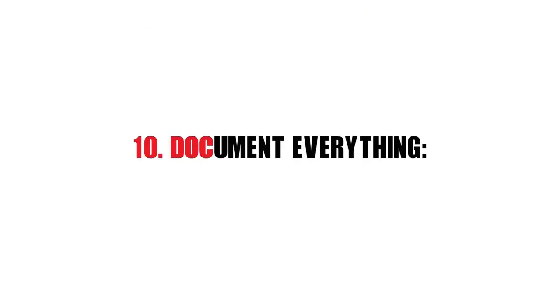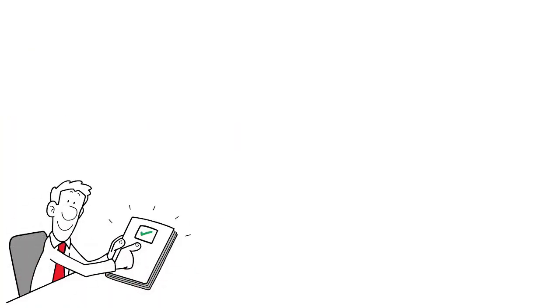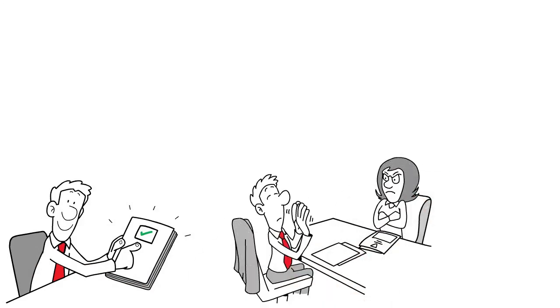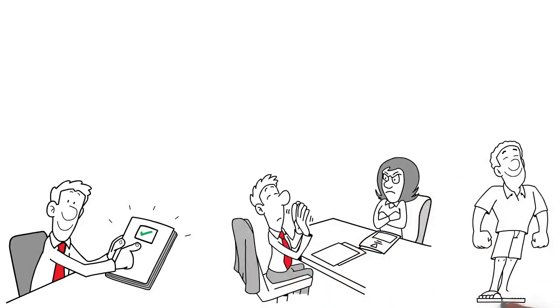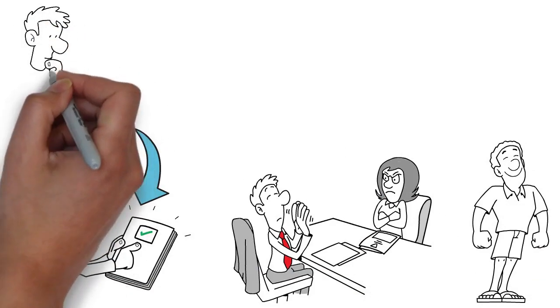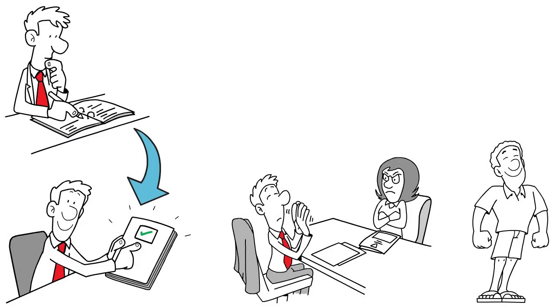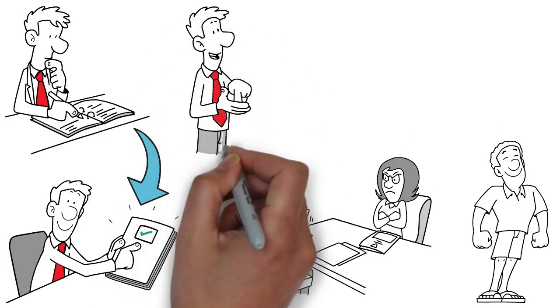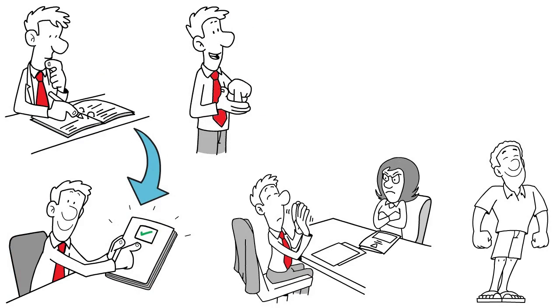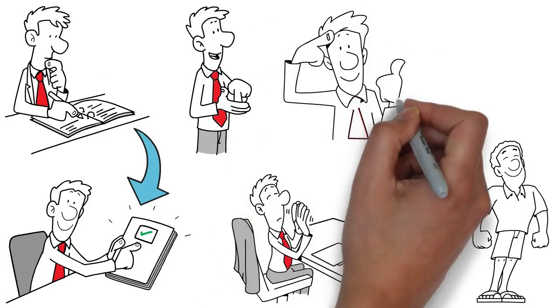10. Document everything. Documenting incidents of manipulative or abusive behavior is a pivotal step in reclaiming your power and ensuring your wellbeing. Keep a detailed journal, meticulously noting down each occurrence, including dates, times, and the surrounding circumstances. This record can play a crucial role in validating your experiences, helping you understand and process them.